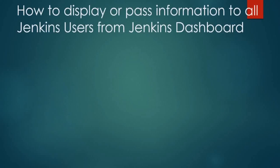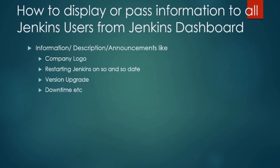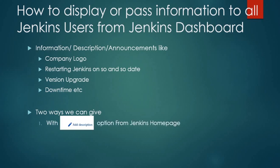Hello, welcome back. Our next question: how to display or pass information to all Jenkins users from the Jenkins dashboard. What type of information? Company logo, restart notices, Jenkins upgrade announcements, or expected downtime — so developers can plan releases and deployments accordingly. There are two ways: one is the 'Add Description' option from the Jenkins dashboard, and the other is Manage Jenkins → Configure System → System Message.